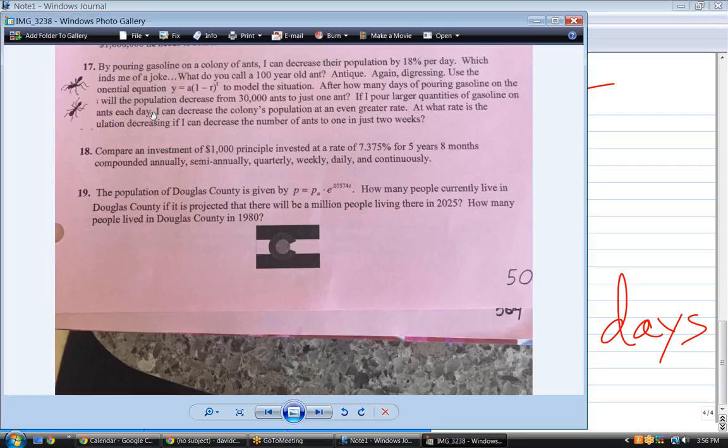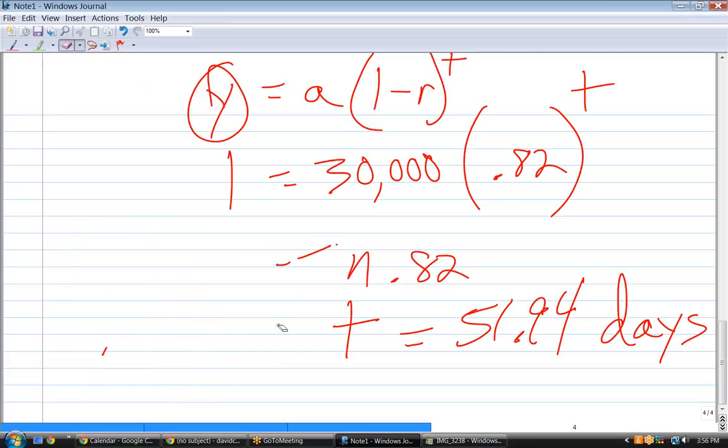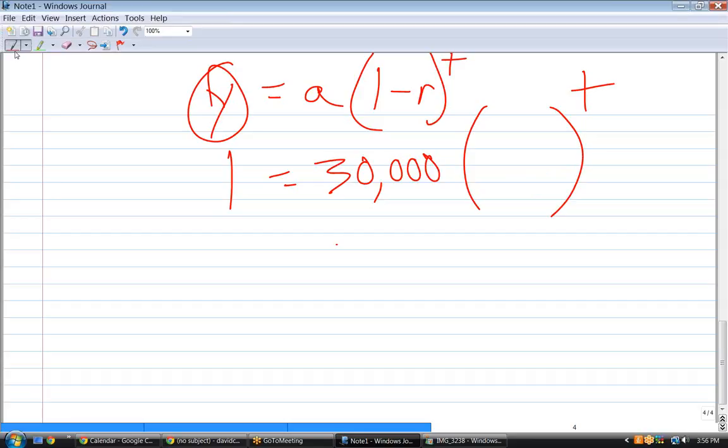All right. If I pour larger quantities of gas on the ants each day, I can decrease the population by an even greater rate. At what rate is the population decreasing if I can decrease the number of ants to one in just two weeks? I think the formula is one equals, oh wait. Still 30,000. Yeah. 30,000 times one minus r raised to 14. There you go. And notice that this is also not requiring logs to solve. This is an algebraic problem. I'm still going to start off dividing by 30,000. Okay.